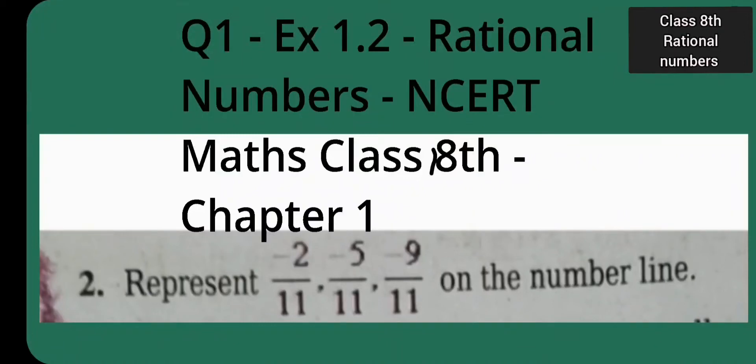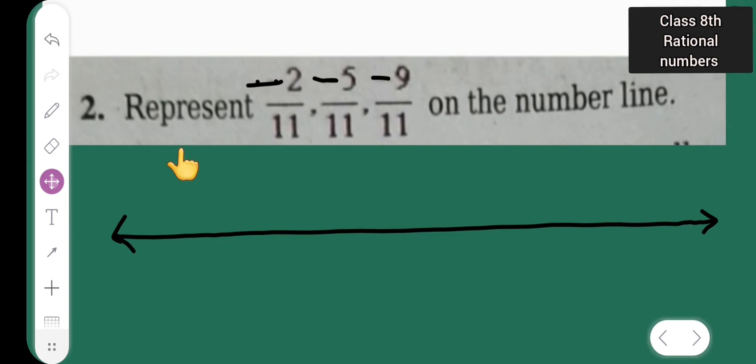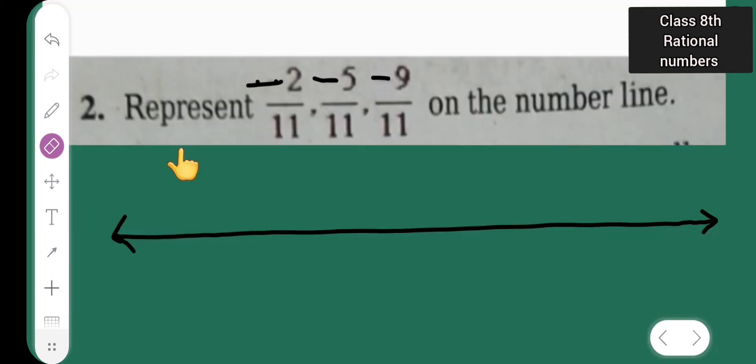So in today's class of rational numbers, I am going to do exercise 1.2, question number 2. That is represent -2/11, -5/11, and -9/11 on the number line. So let me start. Here what is given: represent -2/11, -5/11, -9/11 on the number line.